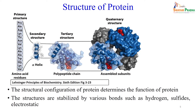Once we have the primary structure — peptide bonds between amino acids — it folds into the secondary structure. This is a special spatial arrangement of the primary linear chain. Secondary structure may have alpha helix, beta sheet, random coil, or beta turns — these are the four major secondary structures.